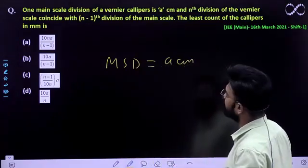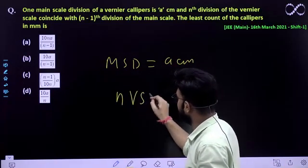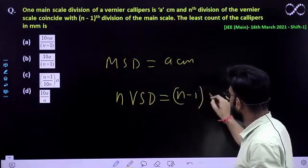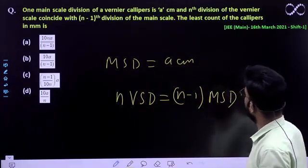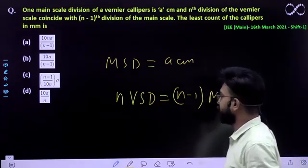nth division of the vernier scale coincides with (n-1) division of the main scale. The least count of the vernier caliper in millimeters needs to be found.